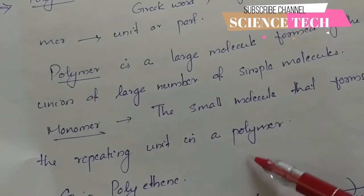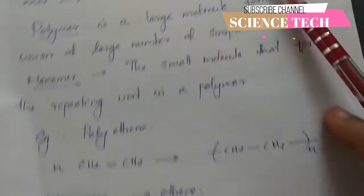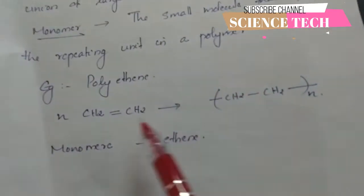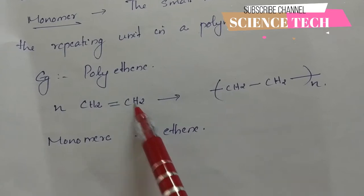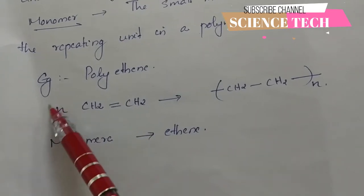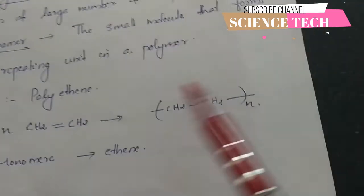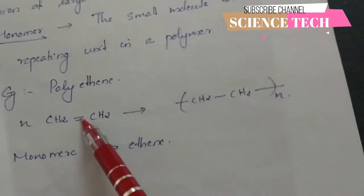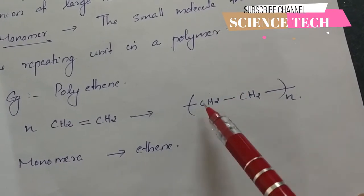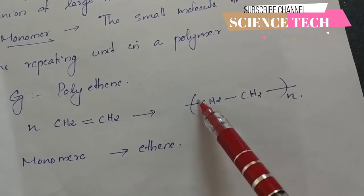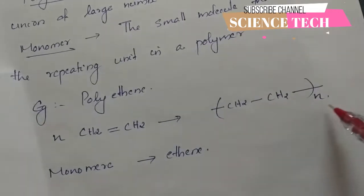Ethene, which has the formula CH2=CH2 with a double bond, polymerizes to form polythene. In this process, the double bond in ethene opens up and the molecules combine to form single bonds, joining N units together to produce the polymer polythene.